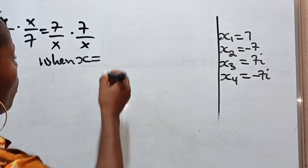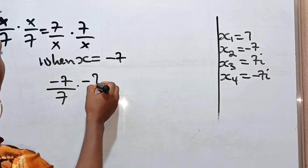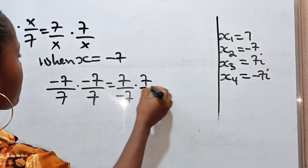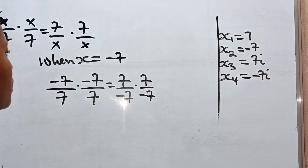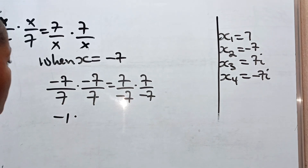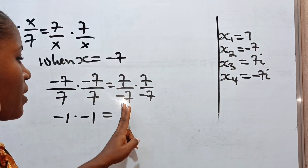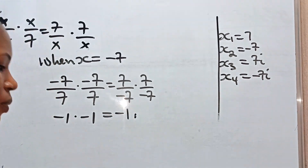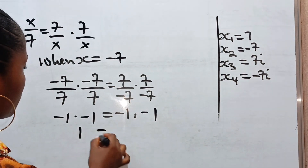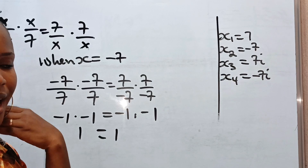When x is equal to minus 7, we have minus 7 divided by 7 multiplied by minus 7 divided by 7 is equal to 7 over minus 7 multiplied by 7 over minus 7. Each fraction simplifies to minus 1, so minus 1 times minus 1 is 1 on both sides. You can see that the left-hand side is also equal to the right-hand side.